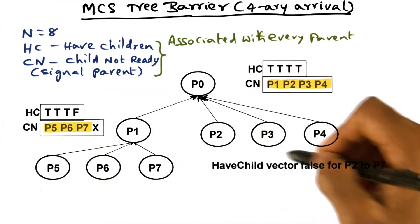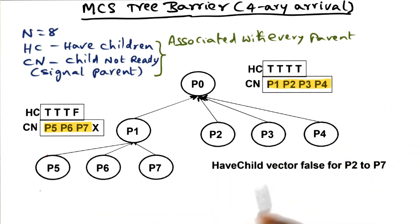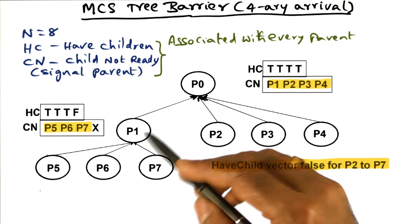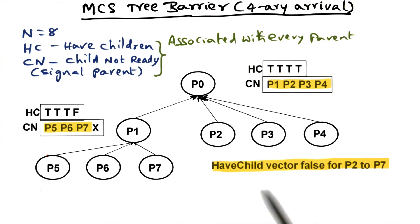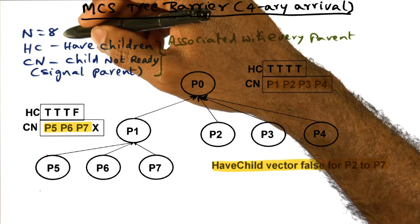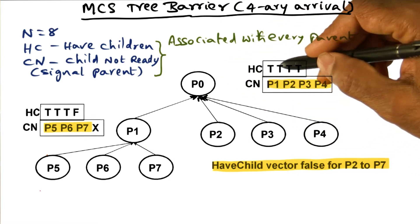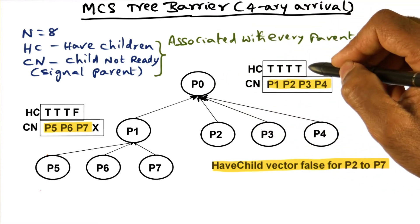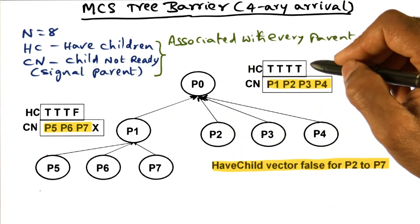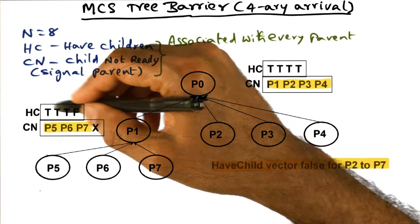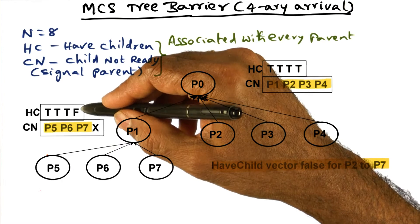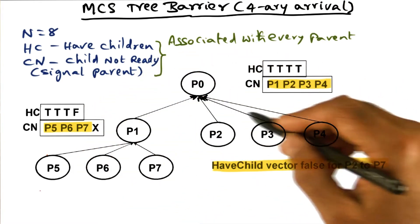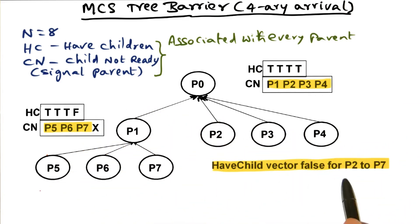P2 through P7 do not have children, so their have-child vector is false. The have-child vector is true for P0 in all bit positions, indicating that since it's a four-ary tree, it can potentially have up to four children — and yes, P0 has four children. For P1, the have-child vector is true for the first three children and false for the fourth, because it has only three children. The have-child vector is completely false for P2 through P7.